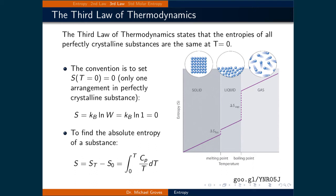Let's now look at the third law of thermodynamics. It states that the entropies of all perfectly crystalline substances are the same at T equals 0 Kelvin. The convention is to set the entropy at 0 Kelvin to be equal to 0, meaning that there is only one arrangement in a perfectly crystalline substance. This is expressed using the definition of entropy where the natural logarithm of 1 is 0, so the entropy at T equals 0 Kelvin is also 0.